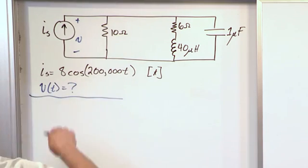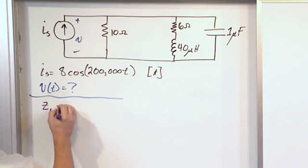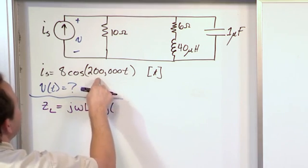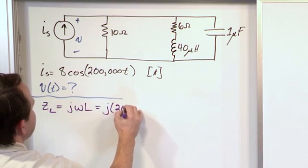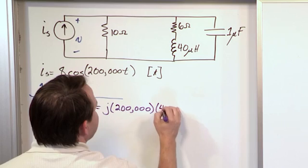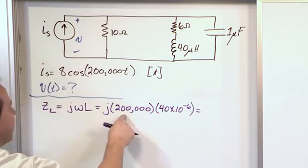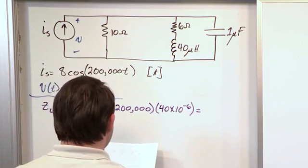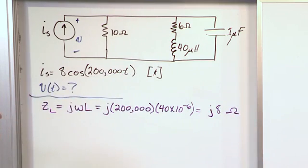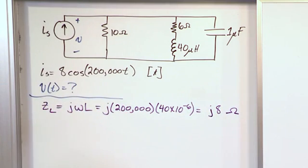The first thing we want to do is calculate the impedance for every item. So the impedance of the inductor is j omega L, which is j times omega - whatever is in front of the T for your source - so 200,000 times the value of the inductance which is 40 micro henry, so 40 times 10 to the minus 6. And when you do all of this, 200,000 times this and you keep the j in front, what you're going to have is j eight ohms. It's an inductor so you expect a positive value for the imaginary impedance there.